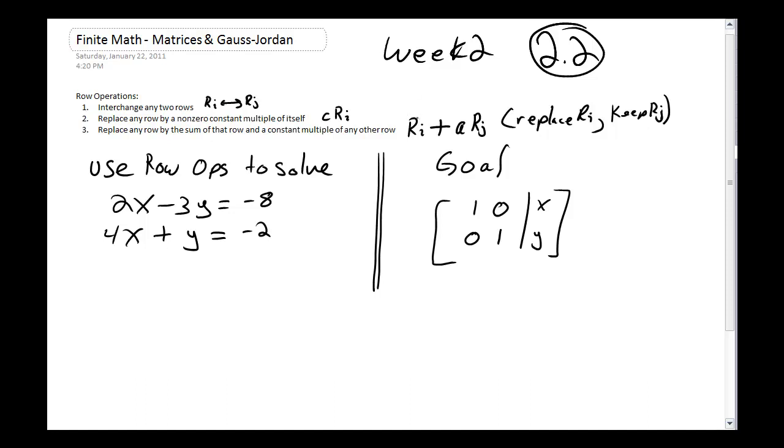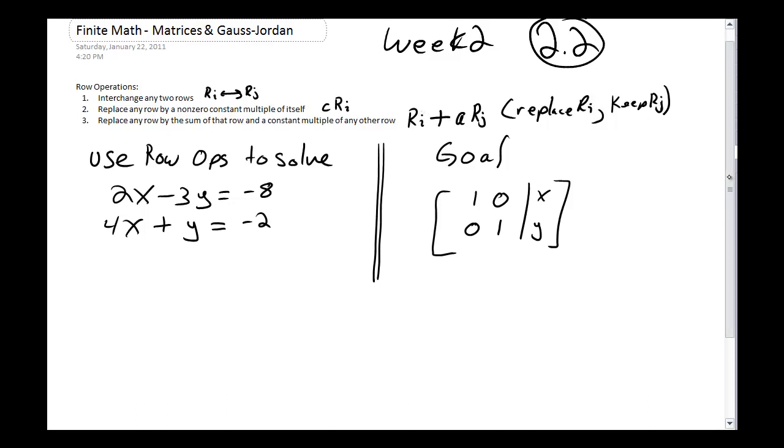When we write this in our notation, we're going to write row I plus A row J. Row I is going to be the one we change. Write the one you're going to change first. That way, when you're looking through your steps at what you did, you know which one was getting changed at what time.